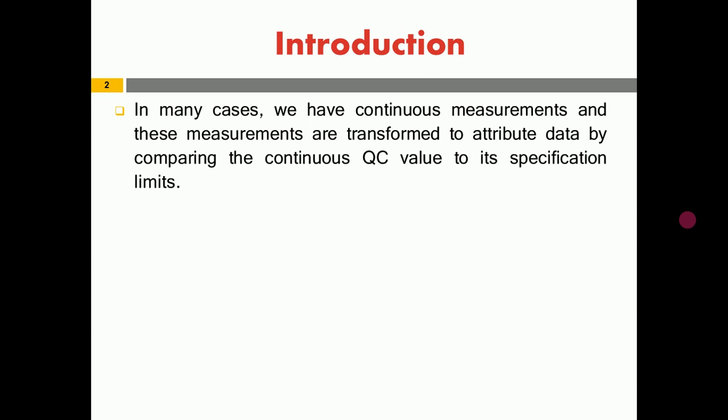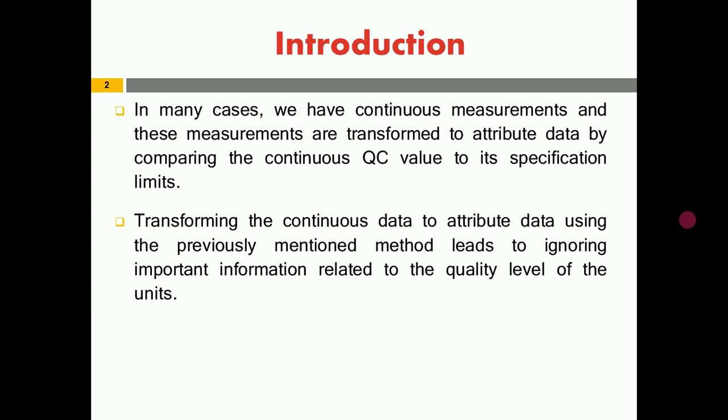In most cases, we work with continuous measurements. Whenever we receive a lot, we take measurements from these lots. However, we tend to transform these measurements into attribute data by comparing units with a specification limit — lower, upper, or both — and identify each unit as defective or not. By practicing, we find that transforming continuous data into attribute data leads us to ignore very important information, especially regarding the quality level of the unit.